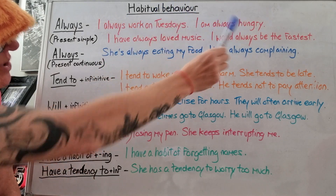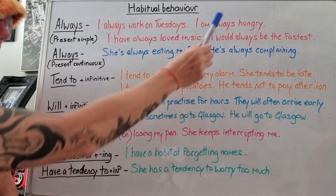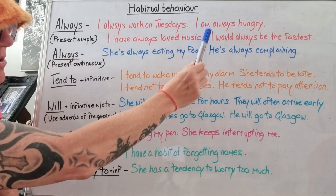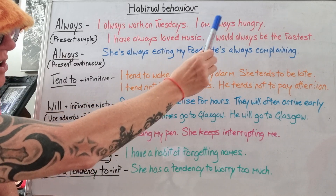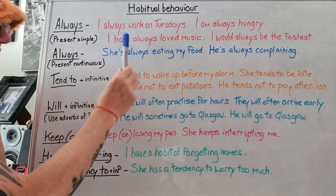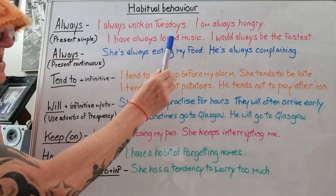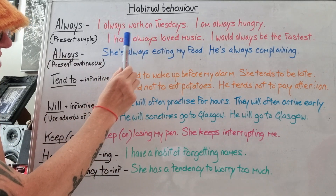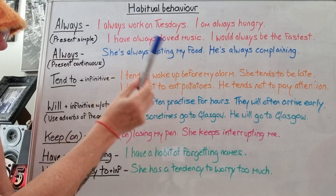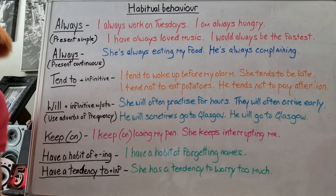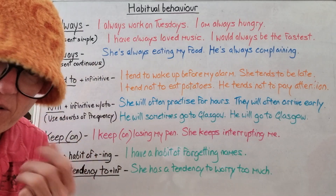I am always hungry — after the auxiliary verb: am, is, are, was, were. I have always loved music. Again, have, has, had — these are also auxiliary verbs.